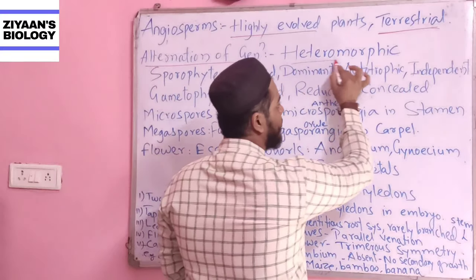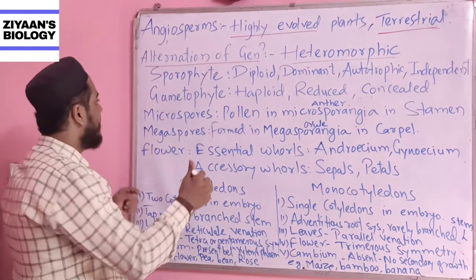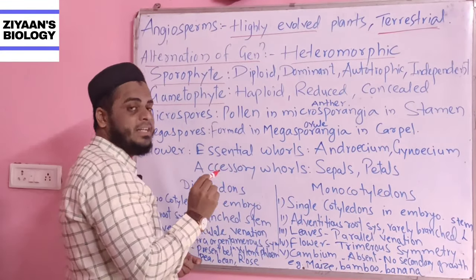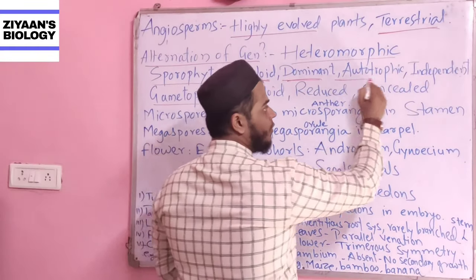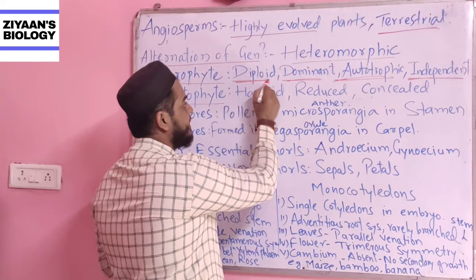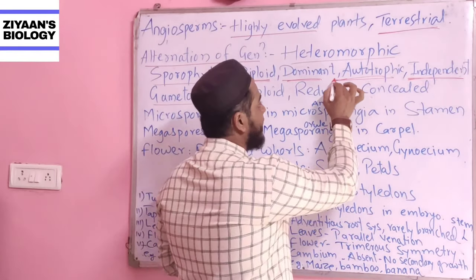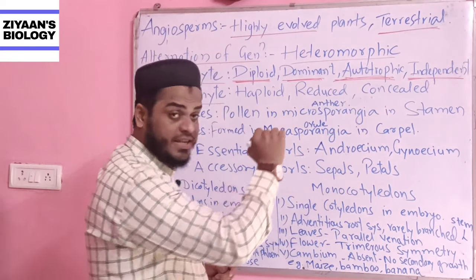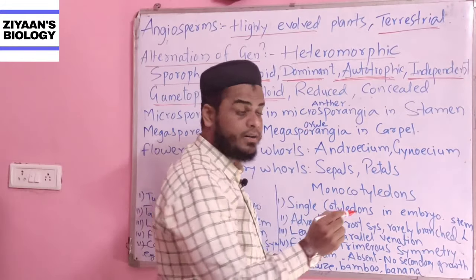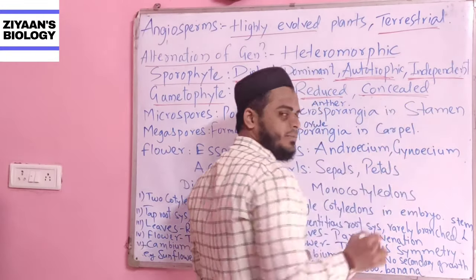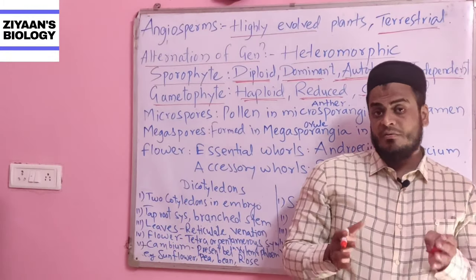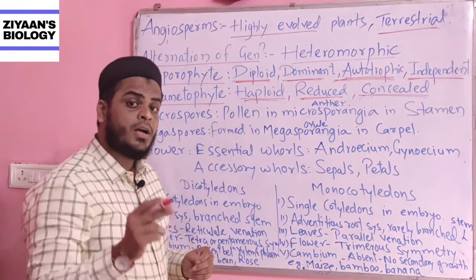Angiosperms show heteromorphic alternation, meaning two different forms: the sporophyte form and the gametophytic form. The sporophyte phase of the angiosperm is diploid, dominant, autotrophic, and independent — not dependent on the gametophyte at all. The gametophyte, on the other hand, is haploid, reduced, and concealed. So the sporophyte is the dominant phase while the gametophytic phase is the recessive phase in the life of angiospermic plants.